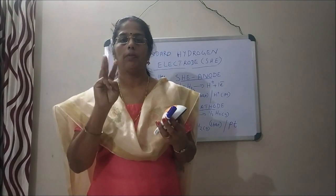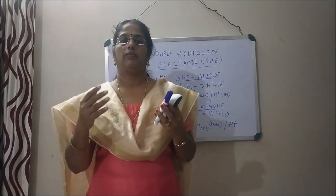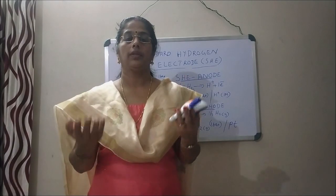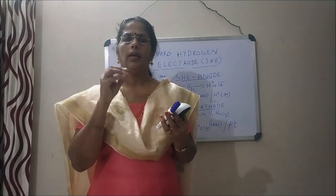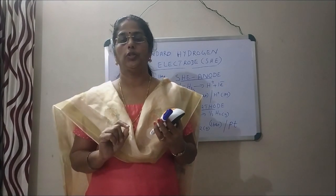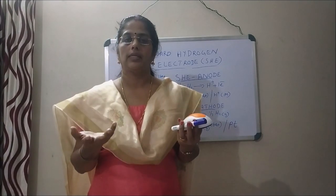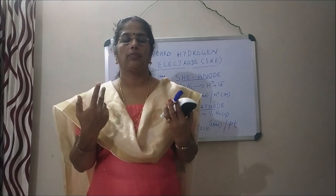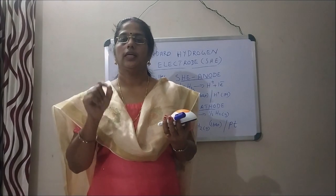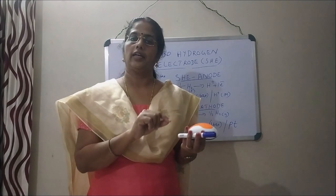The first application of the electrochemical series is that we can compare the reactivities of the metals. For example, we know that zinc metal can replace hydrogen gas from an acid solution, but copper cannot replace hydrogen gas. That is because the value of the reduction potential of zinc is lower than that of hydrogen.